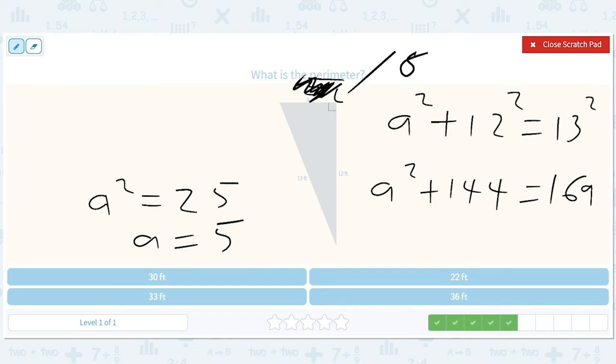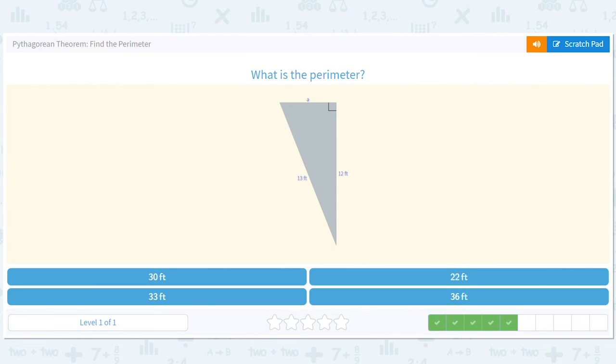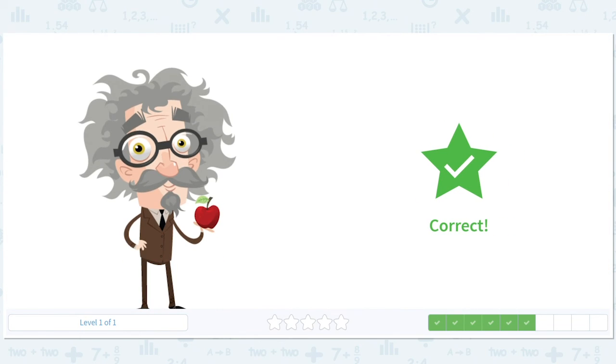So now we know that that's 5. So then the perimeter - oops, that's terrible - the perimeter is 5 plus 12 plus 13. Add these first because that'll give you 25, and then 25 plus 5 is 30.